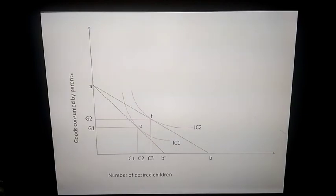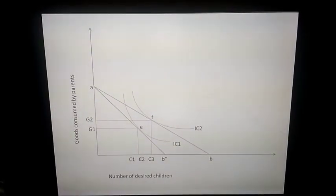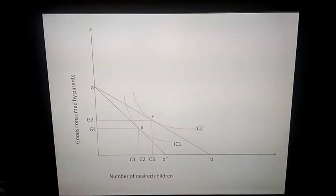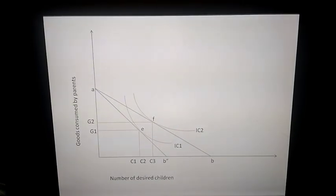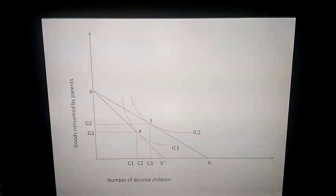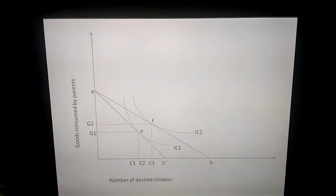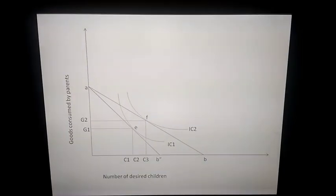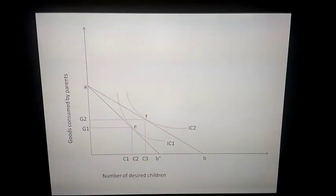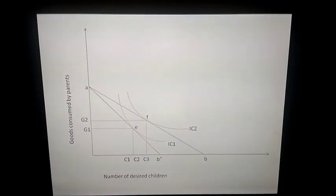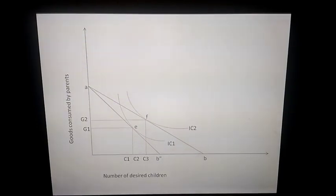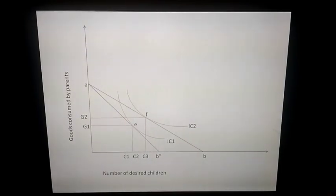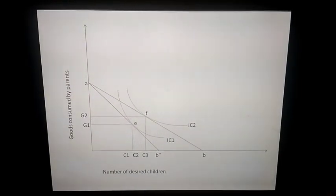At point F, OG2 is the quantity of goods demanded and OC3 is the quantity of children demanded. Now let's assume that the price of children becomes more expensive relative to other goods. This shifts the budget line to the left. The new budget constraint is AB double-dash, and IC1 is the new indifference curve. The new optimum point is E, where a family can have OG1 quantity of goods and OC1 quantity of children.